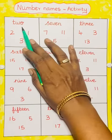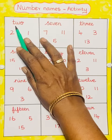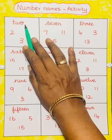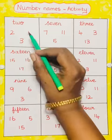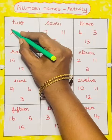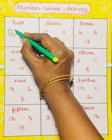See the first number name: 2. T-W-O. 2. So we have to circle the 2.